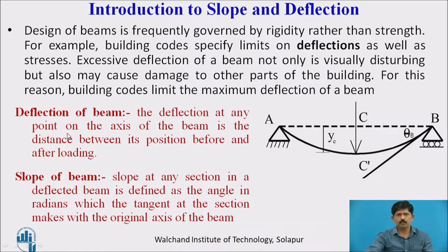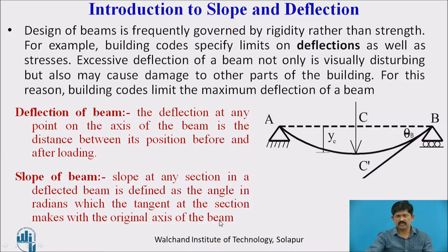Deflection of a beam: The deflection at any point on the axis of the beam is the distance between its position before and after loading. The difference between the beam's position before and after loading is the deflection — it is maximum at the center and decreases near the supports. Slope of a beam: Slope at any section in a deflected beam is defined as the angle in radians which the tangent at the section makes with the original axis of the beam. The angle made by the tangent drawn to the arc with the original axis is the slope, theta B.